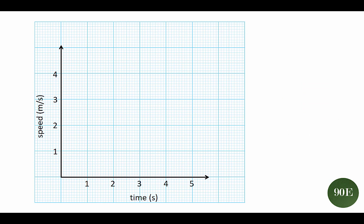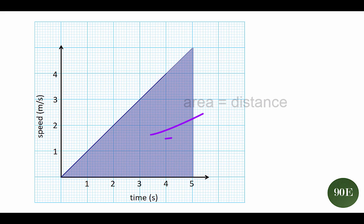This second method, that is, the area under the graph method, is great, and it's the one that we recommend that you use, because it doesn't matter what your journey line looks like, or even what portion of the journey you're interested in. As long as you can calculate the area, you can calculate the distance travelled.